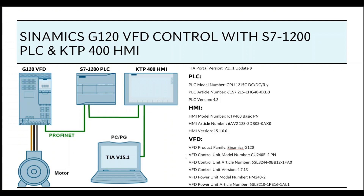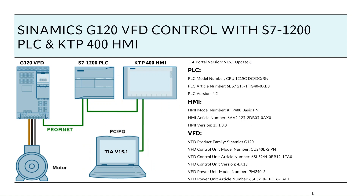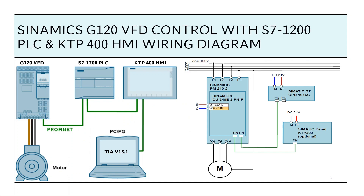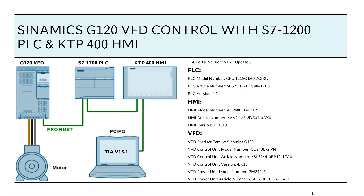Hi, welcome to the Automation YouTube channel. In today's video I will show you how to establish communication between a Siemens VFD and a Siemens PLC. The software used is TIA Portal v15.1 Update 8, the PLC hardware is an S7-1200, the HMI is a KTP 400 Basic, and the VFD is from the Sinamics G120 family. Detailed information including model numbers, article numbers, and version numbers is in the video description below.